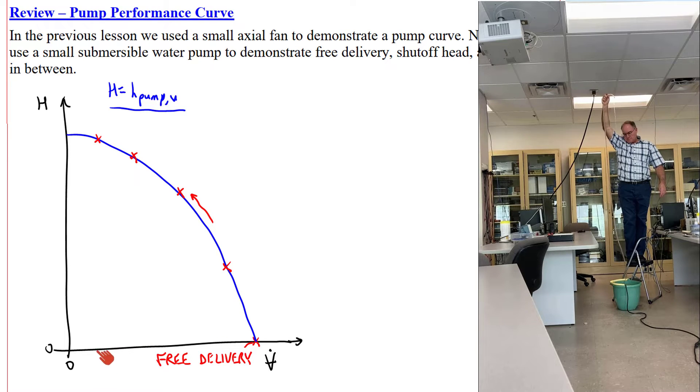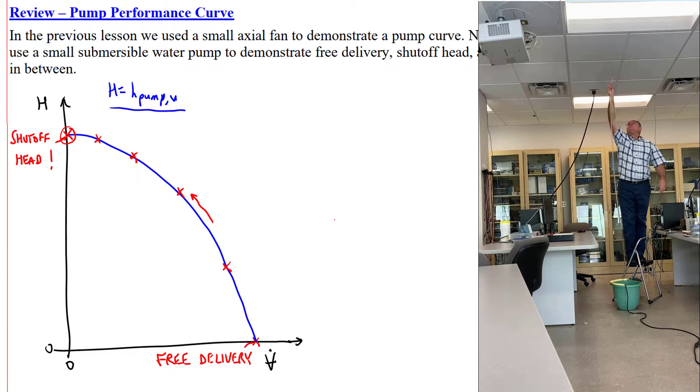In other words, a very small volume flow rate. If we go up a little higher, we've reached the shutoff head. I stand there holding the tube and nothing's coming out. The elevation difference between the water at the top of the tube and the surface of the water in the bucket is our shutoff head, which is H max.